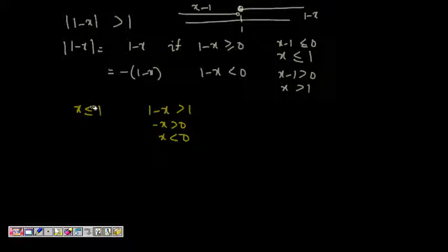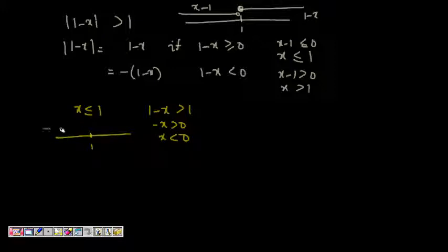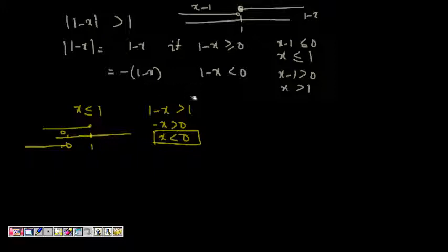So x less than 0 is the solution, but it also has to satisfy x less than or equal to 1. So taking the intersection: x less than or equal to 1 and x less than 0, the intersection gives x less than 0 as the solution for the first case.